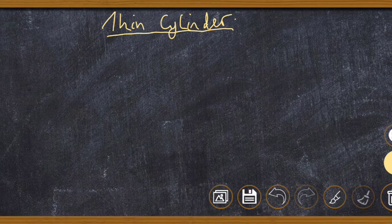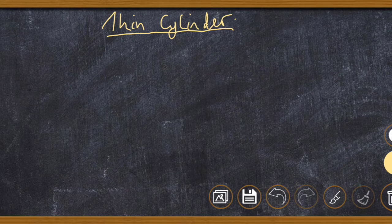Today we'll be starting with a thin cylinder. The first thing we need to understand is: what is a thin cylinder? A thin cylinder is a cylinder that can be used to store fluid. We have various examples — for instance, a vacuum cleaner is an example of a cylinder.